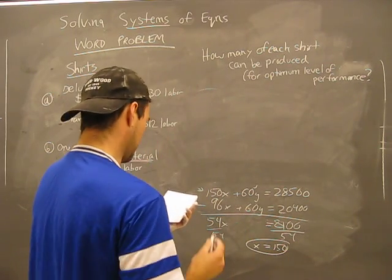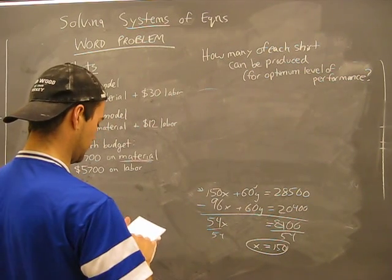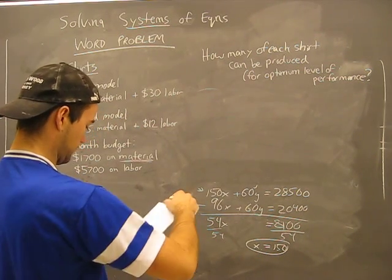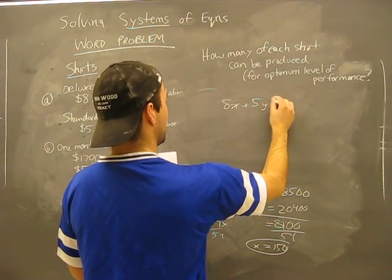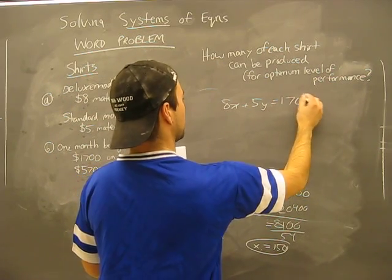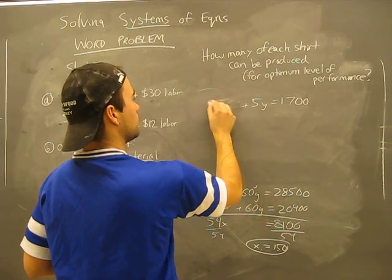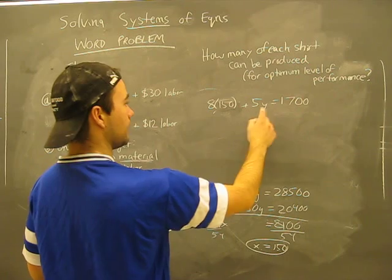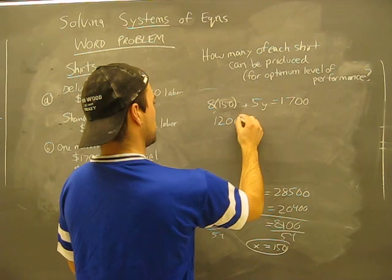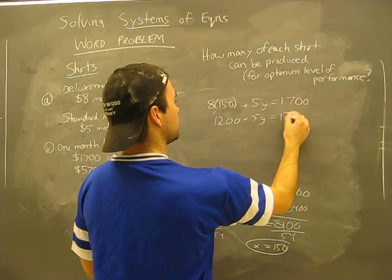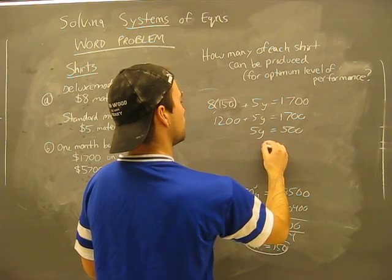What does this mean? Well, when I erase the original equation, hang on a second. 8x plus 5y equals 1700. I have an x. This is an original equation. I'm going to drop that in there. 8 times 150 equals that. That, it turns out that that's 1200 plus 5y equals 1700. So 5y equals 500, y equals 100.